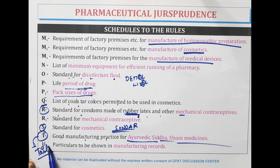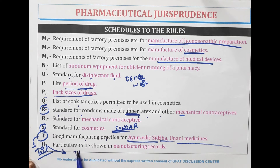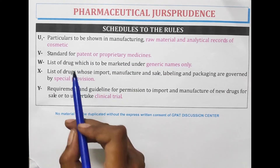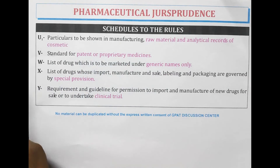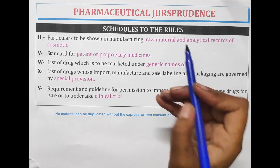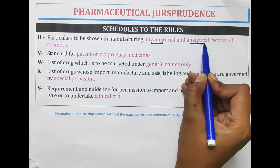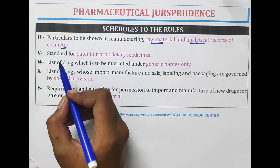Schedule U — U is a standard which contains records. So Schedule U is the particulars to be shown in manufacturing records. Schedule U1 is the particulars to be shown in manufacturing raw materials and analytical records of cosmetics.